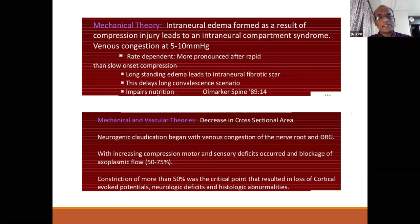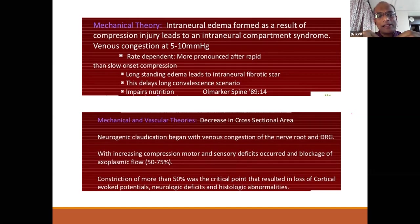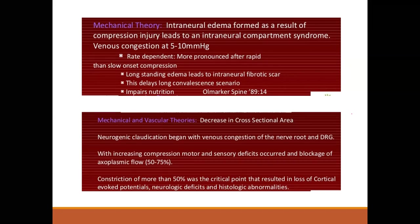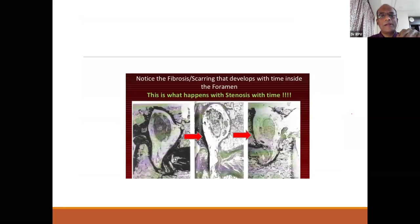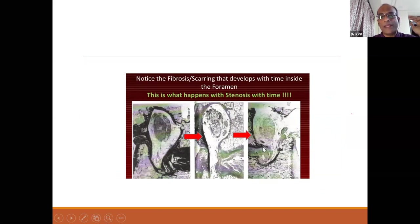The combined effect eventually leads to reduced cortical evoked potentials and histological changes. Because of chronicity, the nerve root cross-section — initially normal — becomes progressively more fibrotic. A severely fibrotic root is well depicted in these pathophysiological specimens.